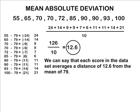We can say that the scores in the data set, on average, are a distance of 12.6 away from the mean of 79.